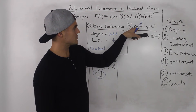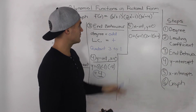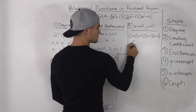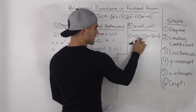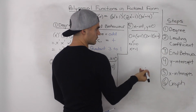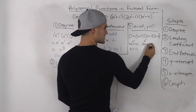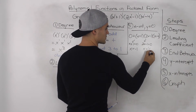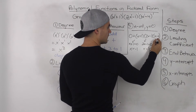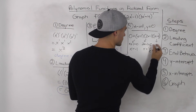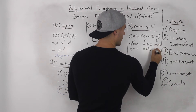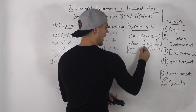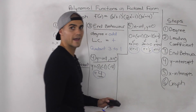Step 5: finding the x-intercepts. Plug in 0 for y. Because it's already in factored form, it's easy — just find when each bracket equals 0. x plus 1 equals 0 when x equals negative 1. 2x minus 1 equals 0 when 2x equals 1, so x equals one half. And x minus 4 equals 0 when x equals 4. So the three x-intercepts are negative 1, one half, and 4.